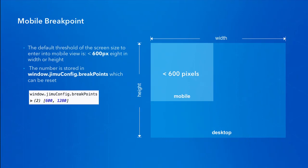This number is stored inside a global variable called `window.gmoo.config.breakpoints`. It is an array. By default, it has two children: the first is the breakpoint for mobile, and the second is for desktop. For example, the Launchpad theme uses the default breakpoint of 600 pixels, while the foldable theme can reset that number to a different one.